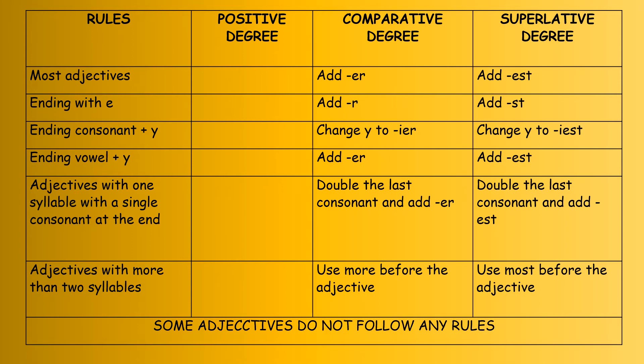Now there are some rules for forming degrees. Rule one: for most adjectives, the positive is the normal adjective, comparative adds -er, and superlative adds -est — for example, tall, taller, tallest. Rule two: if the adjective ends in -e, you add -r and -st — for example, brave, braver, bravest. Rule three: if the adjective ends in a consonant plus -y, change the y to i and add -er and -est — for example, happy, happier, happiest.